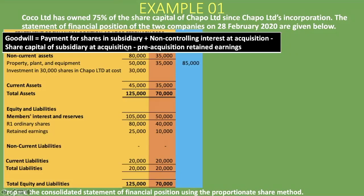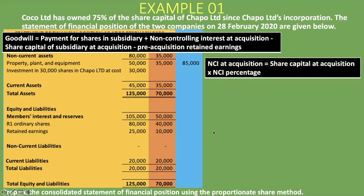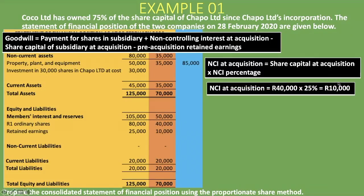We have the payment for shares in the subsidiary — the 30,000 rand investment in the 30,000 shares in Chapel Limited at cost. Then we need to calculate the non-controlling interest at acquisition. The share capital of the subsidiary at acquisition is 40,000 rand (1 rand ordinary shares). There are no pre-acquisition retained earnings because Coco Limited purchased the subsidiary at its incorporation. Non-controlling interest at acquisition is calculated as: share capital at acquisition (40,000 rand) times the NCI percentage (25%), giving us 10,000 rand.